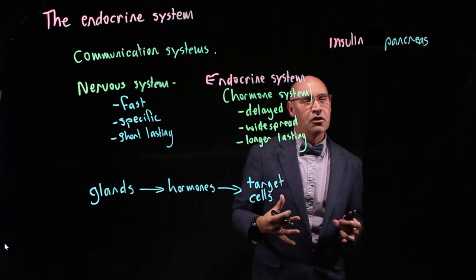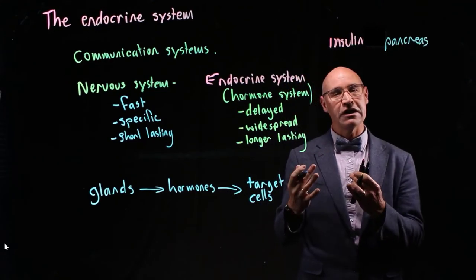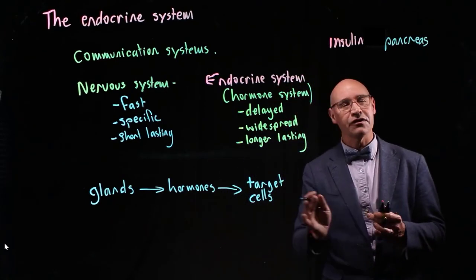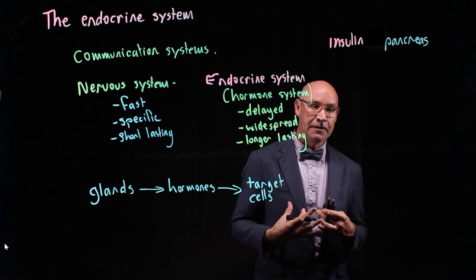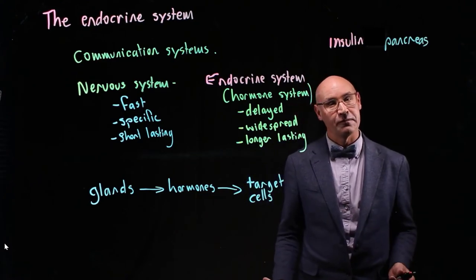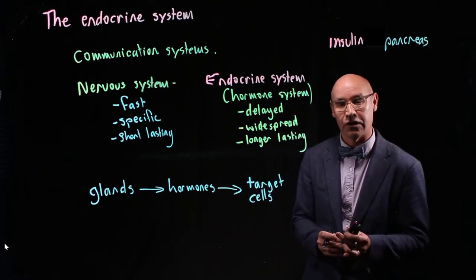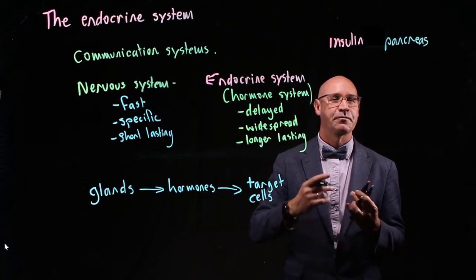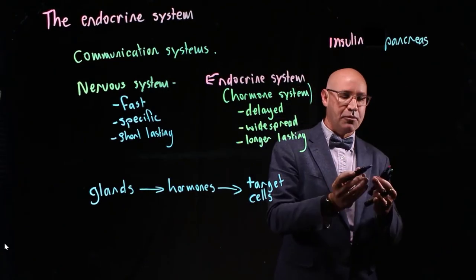It gets released when there's a high concentration of glucose in the blood. Its target cells are the liver and the muscle cells. And it tells those cells to pack away the glucose out of the blood. So insulin is made by the pancreas.